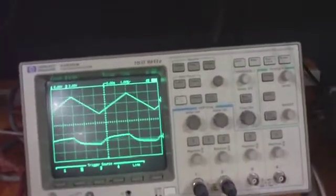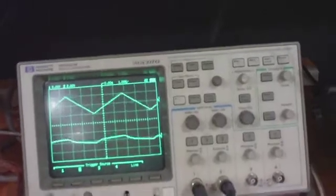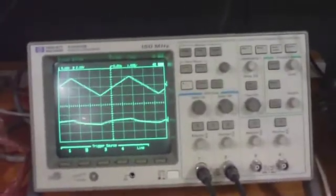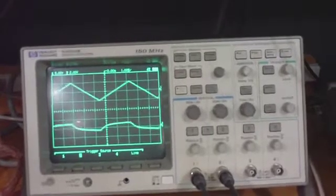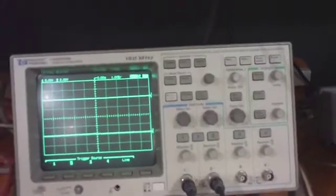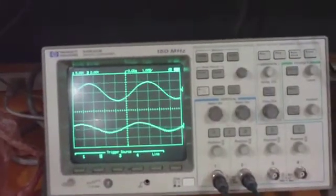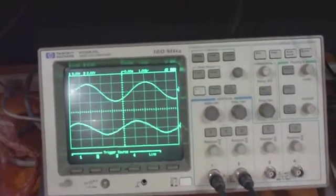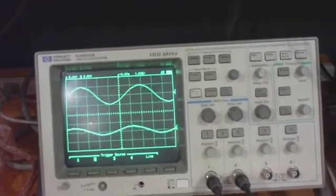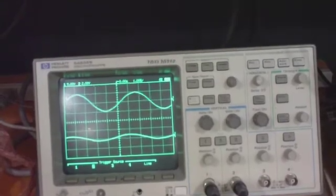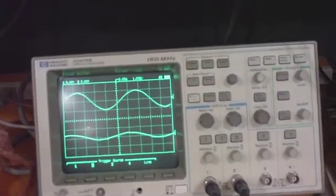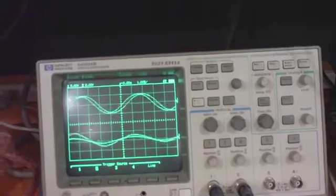The tube screamer does have some capacitors in there, so it's not a pure memoryless non-linearity. It's got some frequency dependence. And let's put in a sine wave. That way we can really hear and really see what the exact distortion characteristic is. So there you can see the rounding off of that sine wave by the diodes. And as you increase in frequency, it starts to do other fun things.